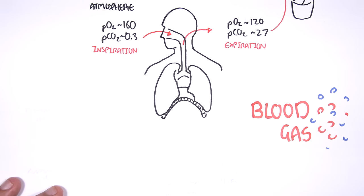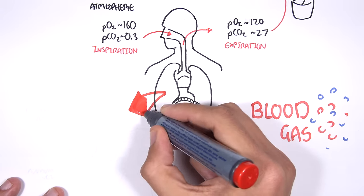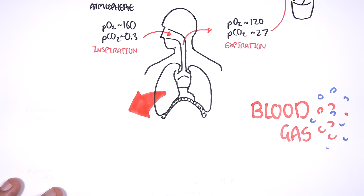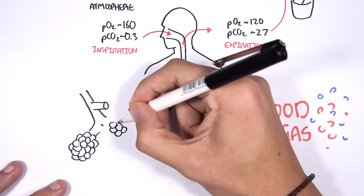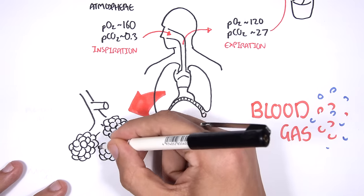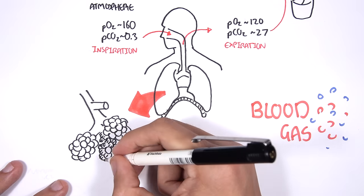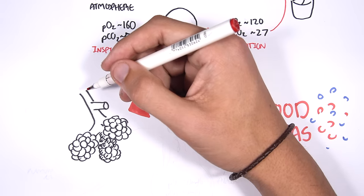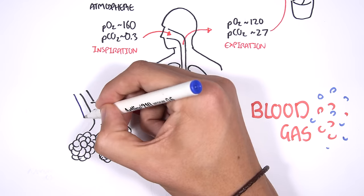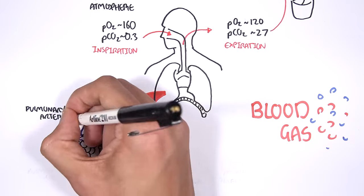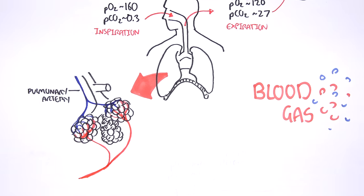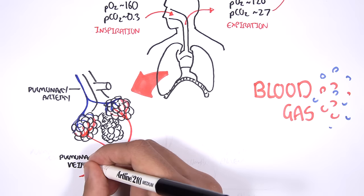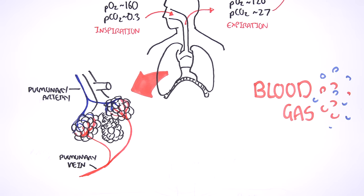Let's have a closer look at gas exchange in the lungs. When we breathe in, gases travel down our respiratory tract to the terminals called the alveoli. The pulmonary arteries come towards the alveoli carrying deoxygenated blood, and they leave the alveoli with reoxygenated blood through the pulmonary veins, all thanks to the gas exchange process that occurs within the alveoli.